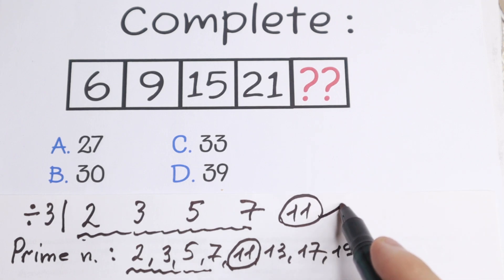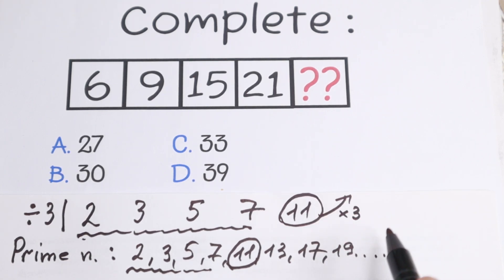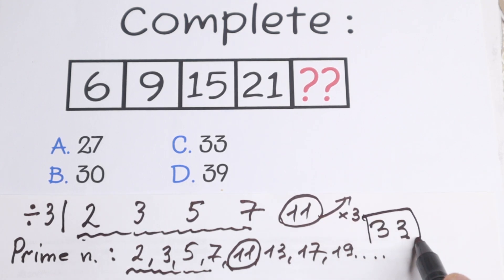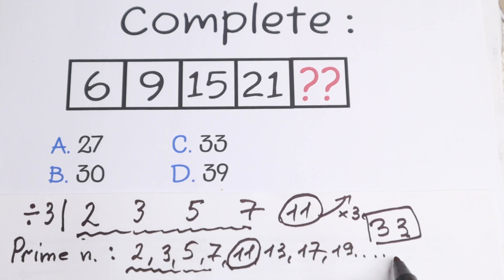And right now we need to multiply by 3. If we multiply by 3, 11 times 3, we will have 33. This is our answer. If you're talking about option, option C.